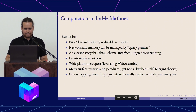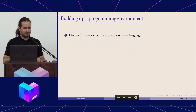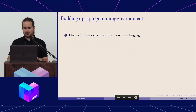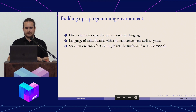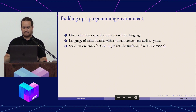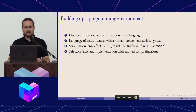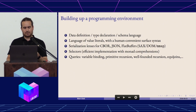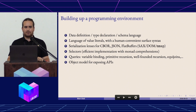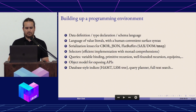In the remaining time, here are the steps on the way to a decentralized programming environment: data definition, a static language of value literals, JSON-style serialization lenses for actual formats so you can represent values in schemas in different ways depending on your application needs, selectors such as maps and filters, and queries where you can bind variables to do recursion.